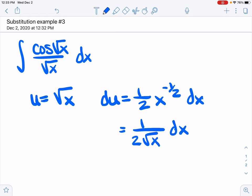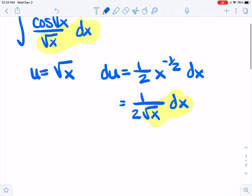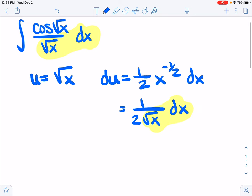And there we have it. We have a dx over square root of x here. We have a dx over square root of x in our original integral. So that's going to allow us to make the substitution. So we can do one more step here and we can say 2 du equals dx over the square root of x.